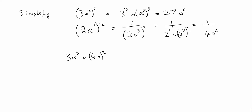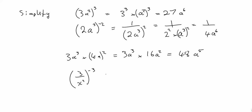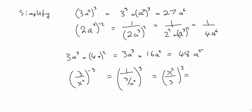Simplify 3a cubed times 4a squared, all squared. The squared acts on the 4 as well as the a, giving times 16a squared. We multiply 3 times 16, which is 48, and a cubed times a squared — add the indices — gives a to the power of 5. Finally, 3 over x squared to the power of minus 3: the negative index means 1 over 3 over x squared to the power of 3. Turning it upside down gives x squared over 3, all cubed, which is x squared cubed over 3 cubed, giving x to the power of 6 over 27.